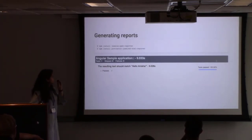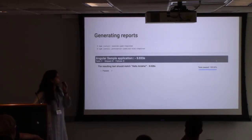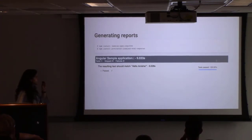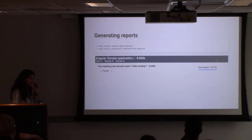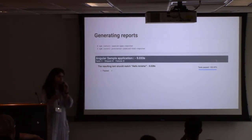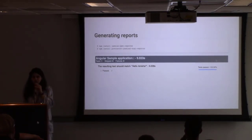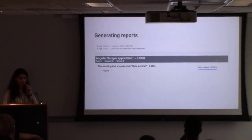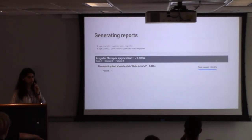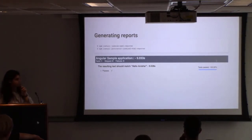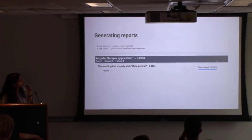For generating reports, we use Jasmine spec reporter and protractor-jasmine2-html-reporter. Jasmine spec reporter provides descriptive reports on the console — by default Jasmine does not give descriptive console reports. The protractor-jasmine2-html-reporter generates HTML reports. Here's how an HTML report would look.